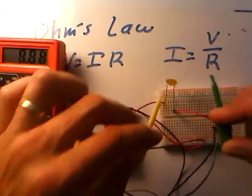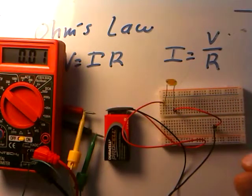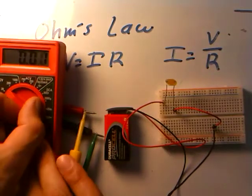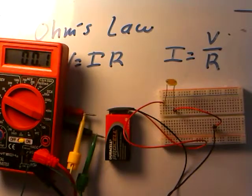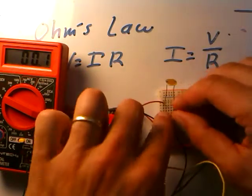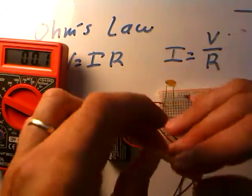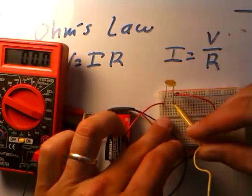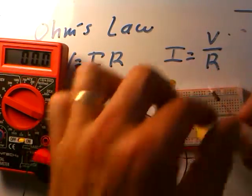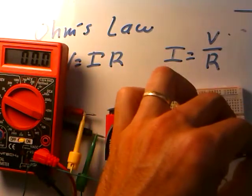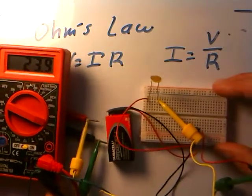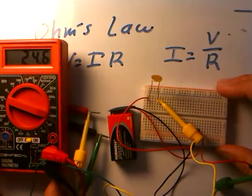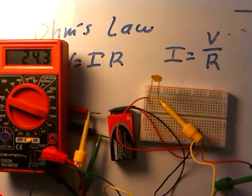Let's disconnect the meter and make a current measurement in the same circuit. I'll click over to the 200-milliamp scale and connect the meter in series to measure the current flowing through the photocell. I'm getting about 24 milliamps flowing through the circuit.